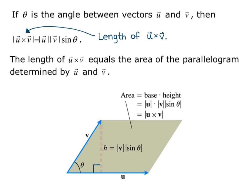We know that the area equals base times height. The base is the magnitude of u, and the height is the magnitude of v times the absolute value of sine theta, and this is equivalent to the magnitude of u cross v. So the area of a parallelogram determined by u and v can be found by taking the magnitude of the cross product.